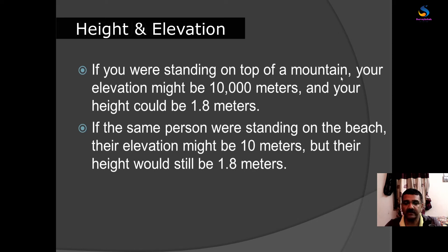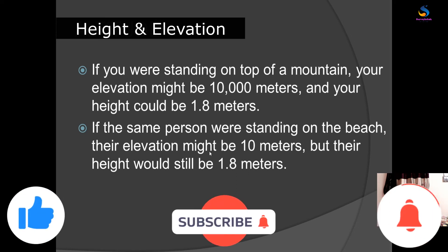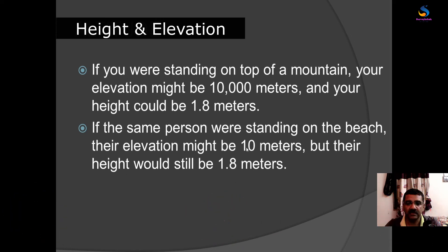Now let's clarify between height and elevation with an example. If you are standing on top of a mountain, your elevation might be 10,000 meters, but your height would be 1.8 meters — that is the height of a human. If the same person is standing on a beach, their elevation might be 10 meters, but their height would still be 1.8 meters. Hope you understand this concept.